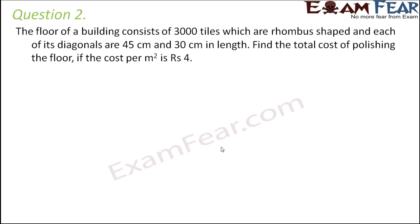Question number 2. The floor of a building consists of 3000 tiles which are rhombus shaped and each of its diagonals are 45 centimeters and 30 centimeters in length. Find the total cost of polishing the floor if the cost per meter square is rupees 4.